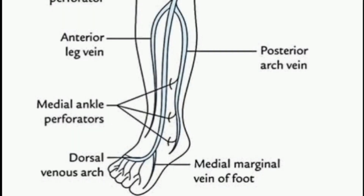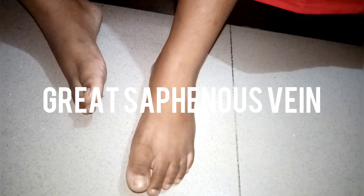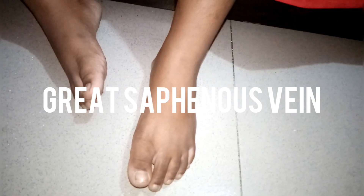This is the great saphenous vein — it is the largest vein of our body, formed by the union of the medial marginal vein and the medial end of the dorsal venous arch. It has 15 to 20 valves. Let's see the surface marking of the great saphenous vein.